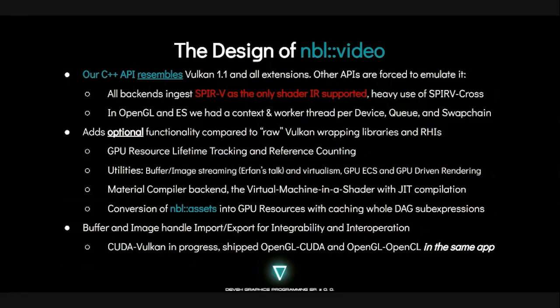That's part of our optional functionality compared to some raw Vulkan wrapping libraries and render hardware interfaces. There are also utilities like buffer and image streaming, a GPU entity component system, GPU-driven rendering, and obviously the material compiler. There's also code to facilitate the conversion of NBL assets into GPU resources while caching duplicates and resolving stuff, and obviously all of the wonderful interop.